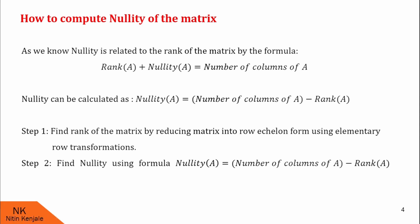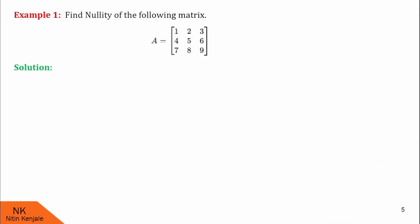Since this is only two-step method, I hope it is easy to find. Now, let us see some examples. Here is our question number one. We are asked to find the nullity of the following matrix. This is matrix A. Its order is 3 cross 3.